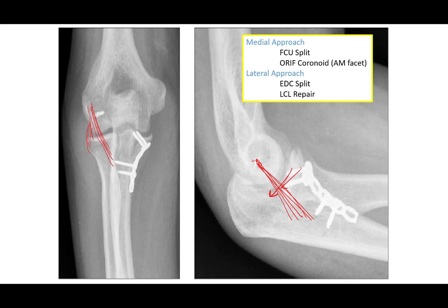The lateral collateral ligament sits posterior and lateral, preventing the radial head from coming out with valgus stress. When it is disrupted, you can have instability, and it is imperative — especially in terrible triad injuries — that you repair or reconstruct it. Otherwise, you will have recurrent instability.